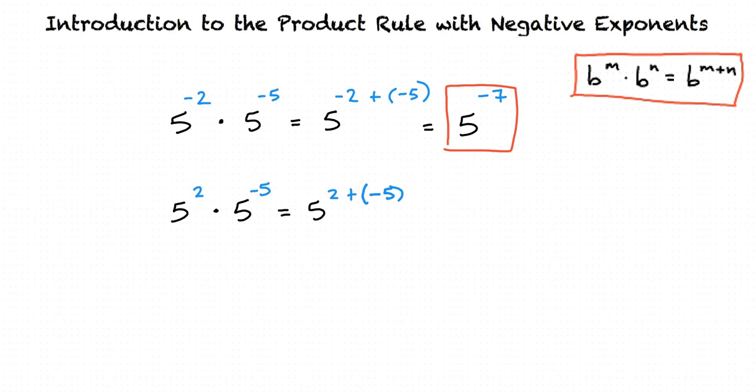2 plus negative 5 equals negative 3, so the final answer is 5 to the negative 3 power. So that means that when I have exponentials multiplied together with the same base, I add their exponents together, whether positive or negative?